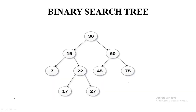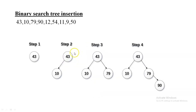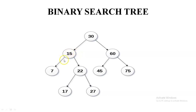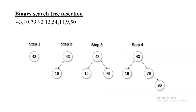For example, the root node is 30. The next value inserted is 15, which is less than 30. The left child of 15 is 7, which is smaller than 15, and the right child is 22, which is greater than 15. Similarly, for node 60, the left child is 45 (less than 60) and the right child is 75 (greater than 60). This confirms the binary search tree property.